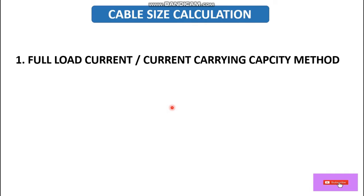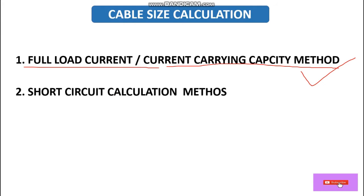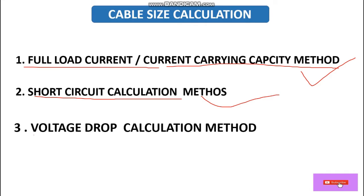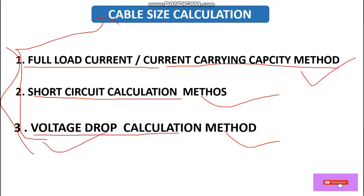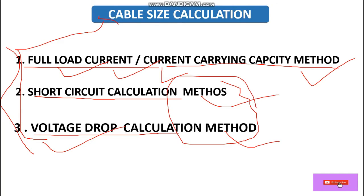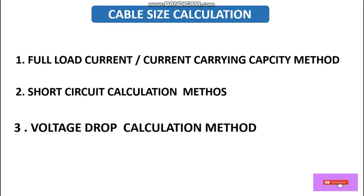The first method is full load current or current carrying capacity method. The second is short circuit calculation method. The third is voltage drop calculation method. During the selection of cables we need to consider all three. In this video we will only focus on the full load current method, or current carrying capacity. In later videos we will cover short circuit and voltage drop.